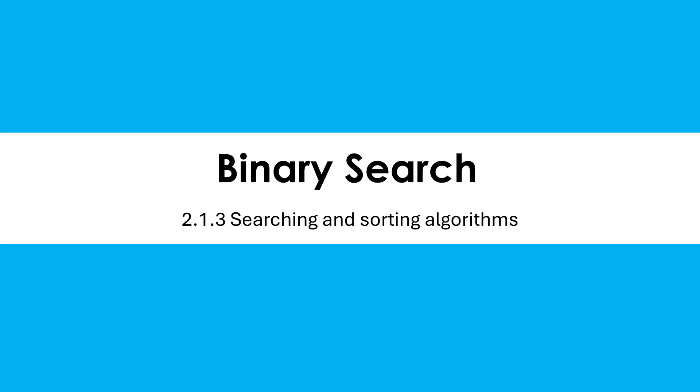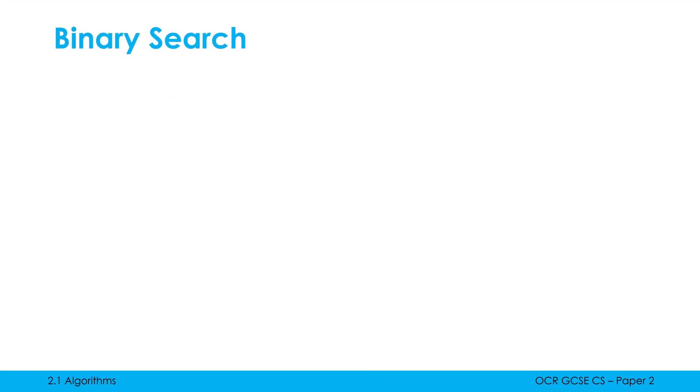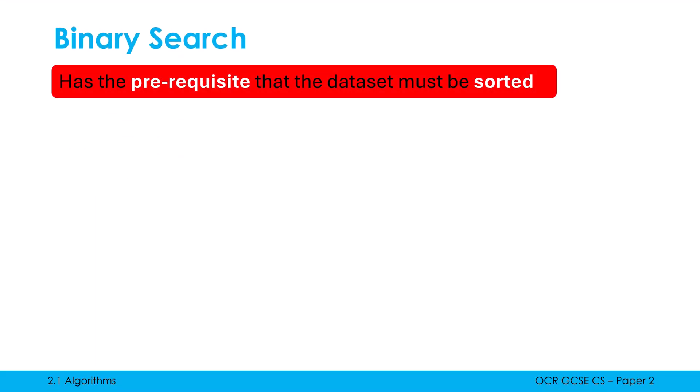We're now going to look at binary search, which is the second of our major searching algorithms. Now binary search comes with a big warning as a starting point and we have to keep it in our heads as we're looking at binary search and evaluating it versus linear search.